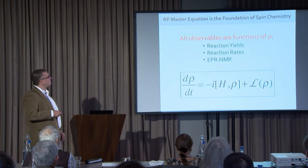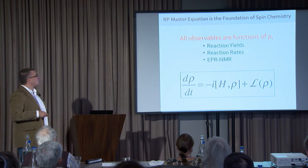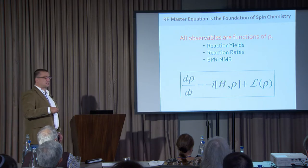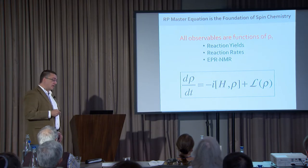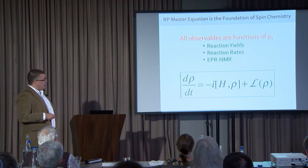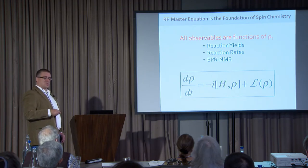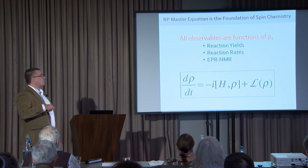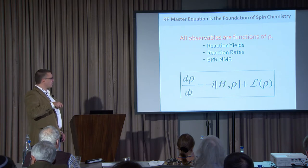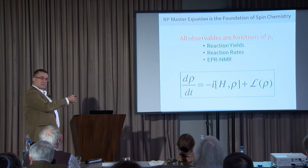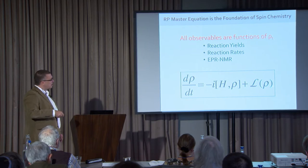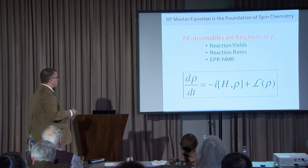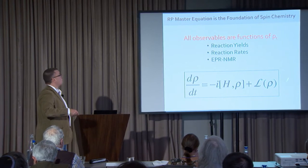This is foundational for the whole field of spin chemistry, because obviously all observables — reaction yields, reaction rates, EPR and NMR observable calculations, and the avian compass — rest on the time-evolved quantum state of the spin system. This time evolution is complicated; it's not only unitary because of the magnetic interactions within the molecules, but because radical pairs form an open system it has also another term describing the open quantum dynamics, and our focus has been: what is this term?